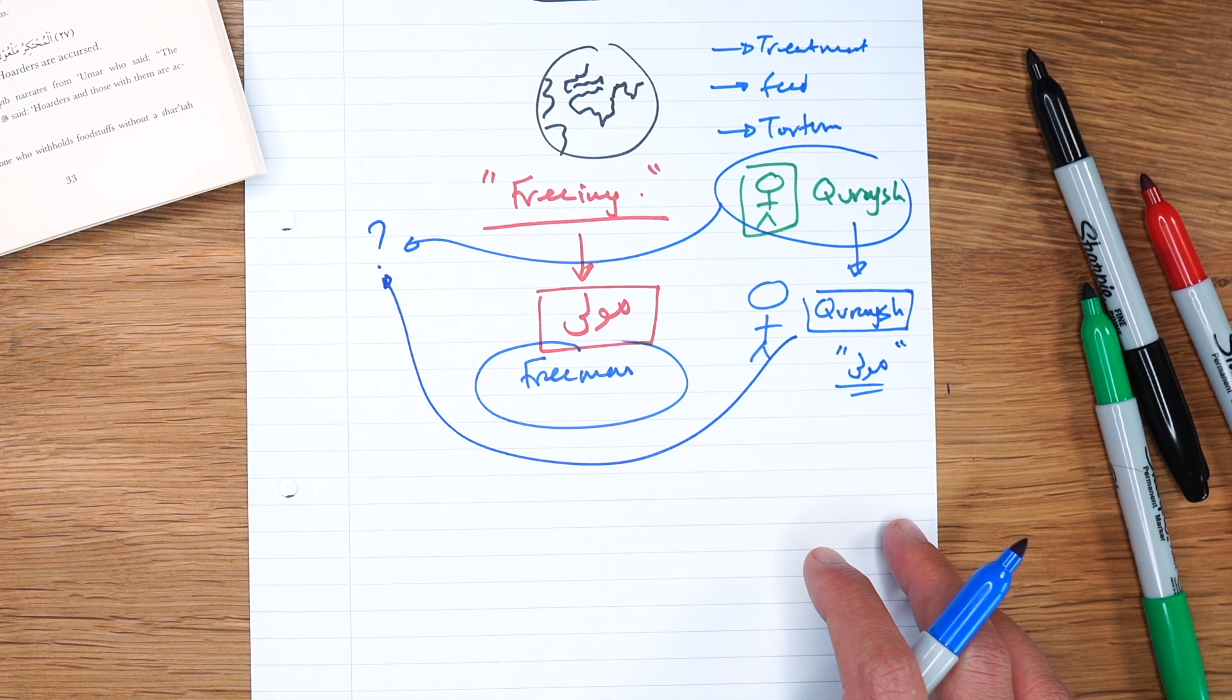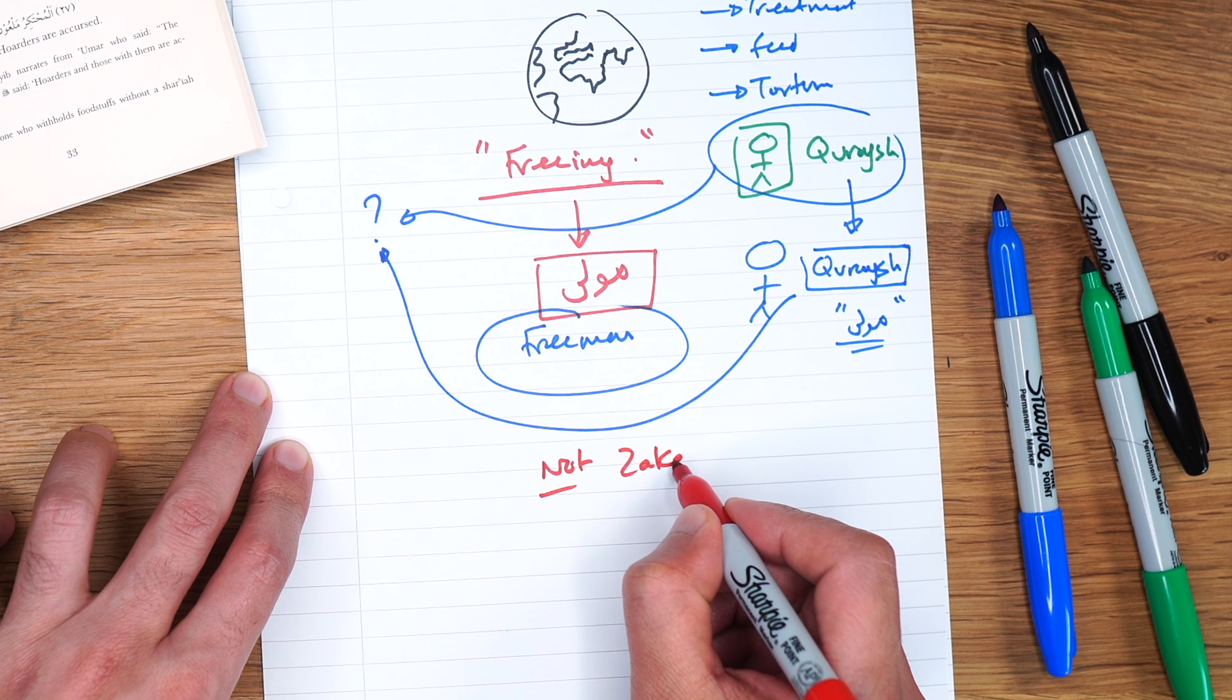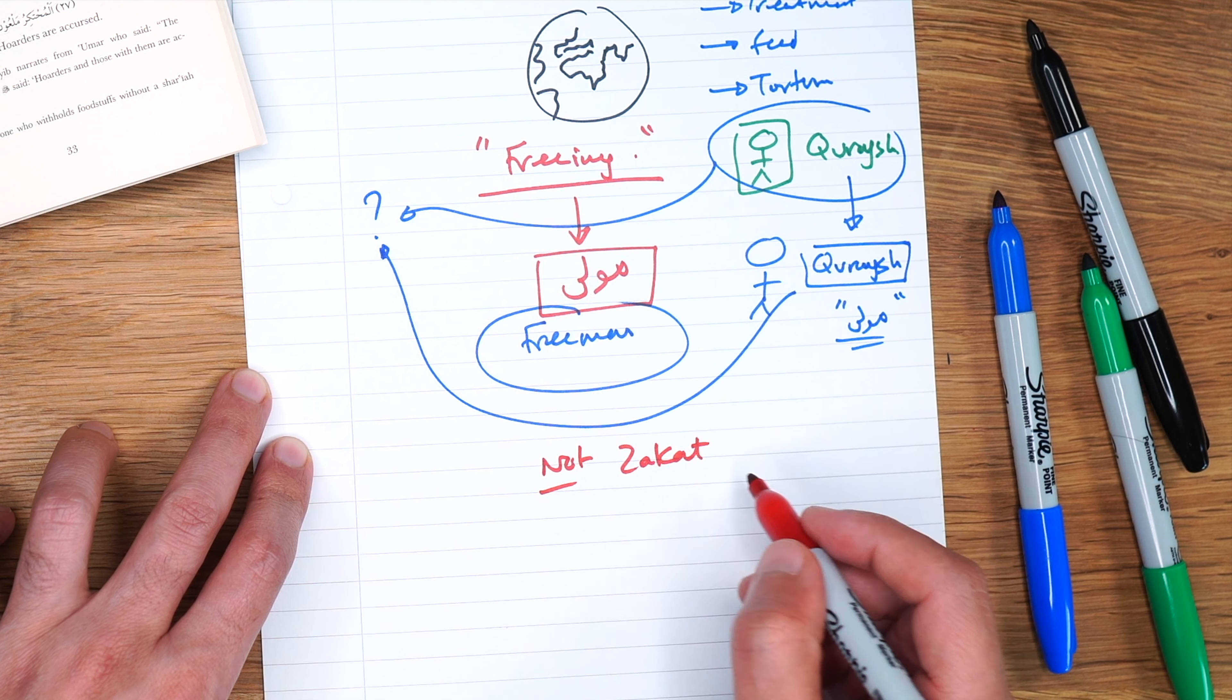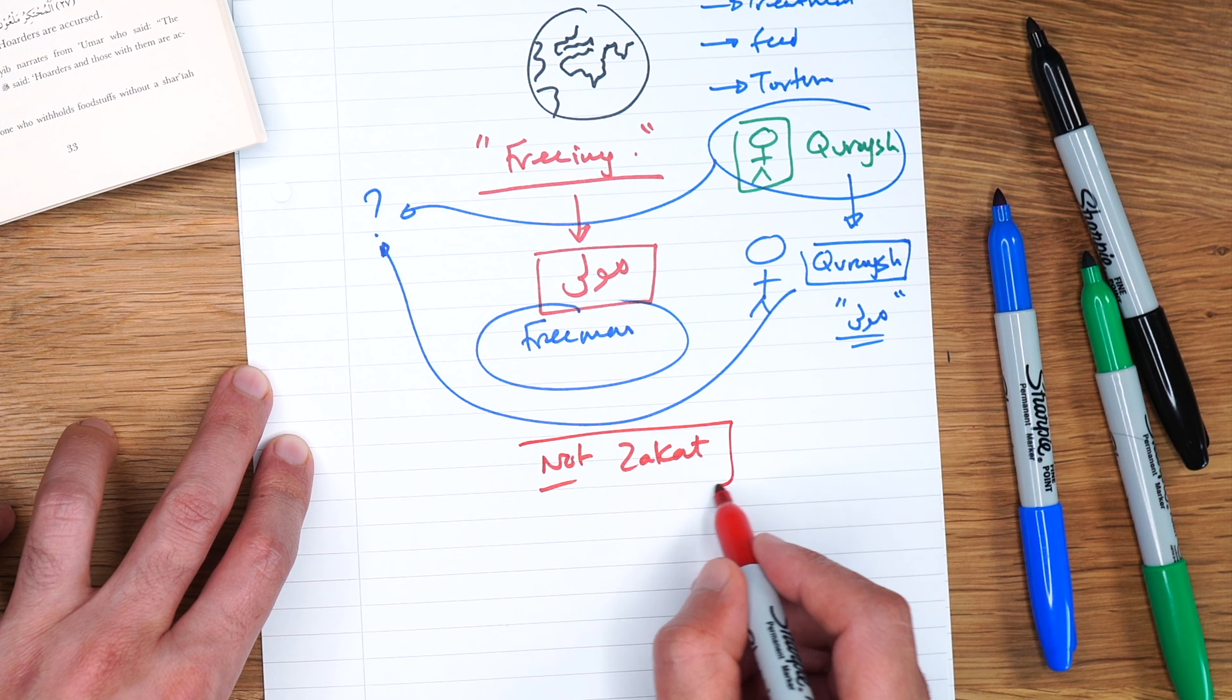And if it was an ex-slave of the lineage of the Prophet ﷺ, the mawla would also gain that status. And what's one of the rulings regarding the mawlas? Well one of the rulings of the Prophet ﷺ's lineage is that they cannot take zakat. People who are from the lineage of the Prophet ﷺ, the paternal lineage of the Prophet ﷺ, is not permitted to take zakat. And hence the mawla of the person who is from the lineage of the Prophet ﷺ is also not allowed to take zakat.